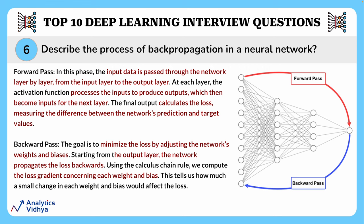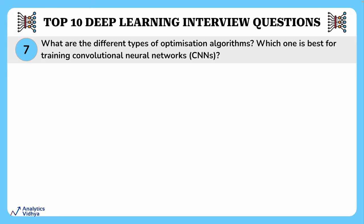In the forward pass, input data is passed through the network layer by layer from the input layer to the output layer. At each layer, the activation function processes the inputs to produce outputs, which become inputs for the next layer. The final output calculates the loss — the difference between the network's prediction and the target values. In the backward pass, back propagation minimizes the loss by adjusting weights and biases using the calculus chain rule to compute the loss gradient with respect to each weight and bias.